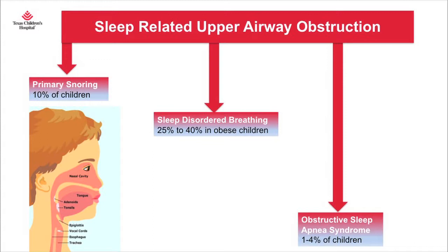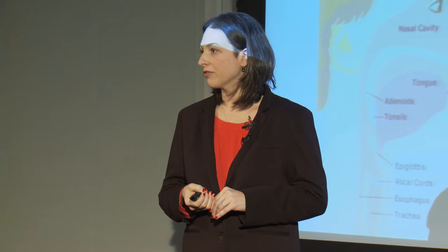What we're concerned about is kids that have sleep disordered breathing, which can affect up to about 40% of kids who are obese. These are kids that are snoring and also obstructing. Parents come to the office saying they have to reposition them in the middle of the night because they hear them pausing, gasping, choking, or coughing during sleep.